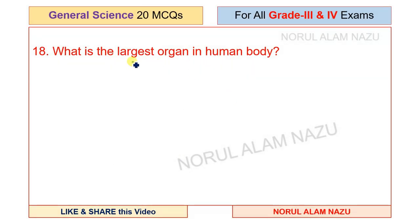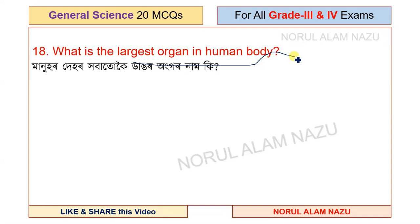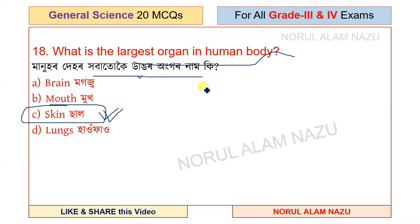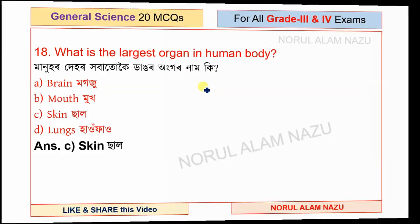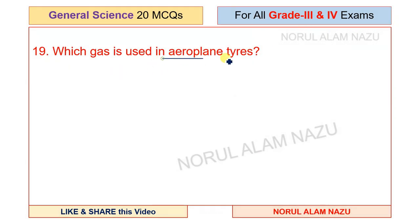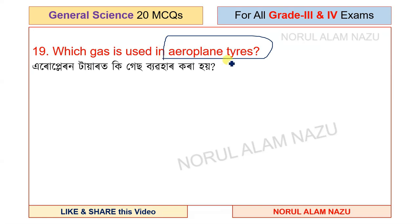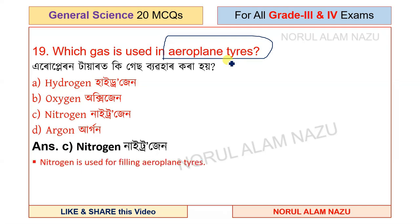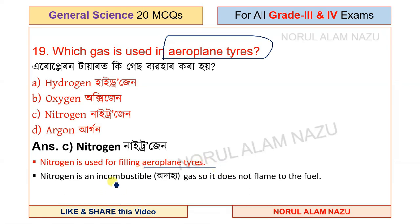Question number 18: What is the largest organ in the human body? Also, which gas is used for fueling airplane tires? The answer is nitrogen — nitrogen is incombustible so it doesn't add flame to the fuel.